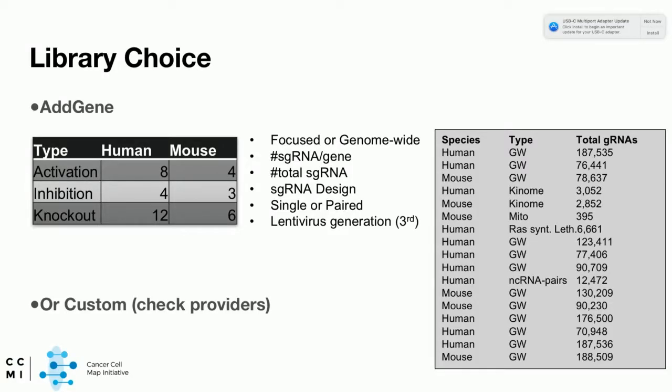The first choice is choosing your library. There are publicly available CRISPR libraries including activating, inhibiting, and knockout libraries — the last being our focus, especially for human. When selecting a library, you need to decide whether you want a genome-wide screen or a focused panel. You need to consider the resolution: how many single guide RNAs, the redundancy per gene, total guide RNA count, and whether guides are single or paired. JP, one of our speakers, uses paired single guide RNAs to perform synthetic lethality screens. Finally, consider lentiviral generation.